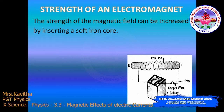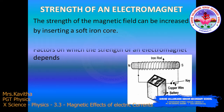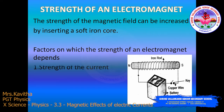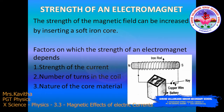Now, what are the factors on which the strength of the electromagnet depends? One: the strength of the current. Two: the number of turns in the coil. Three: the nature of the core material.